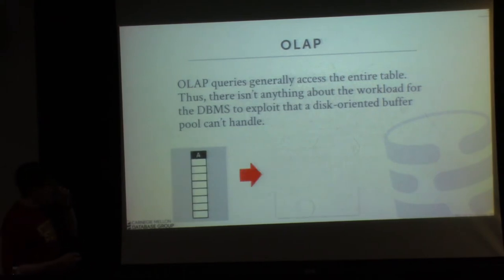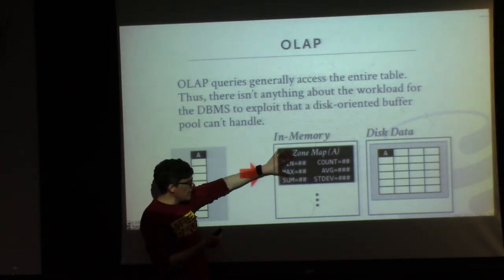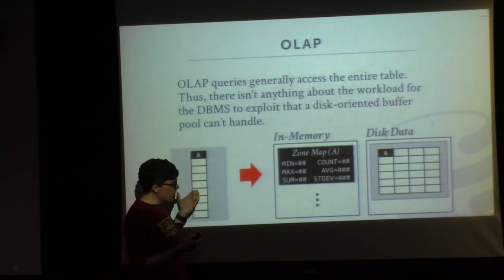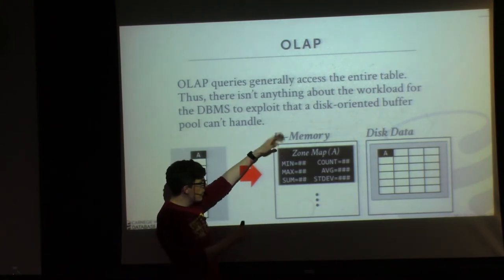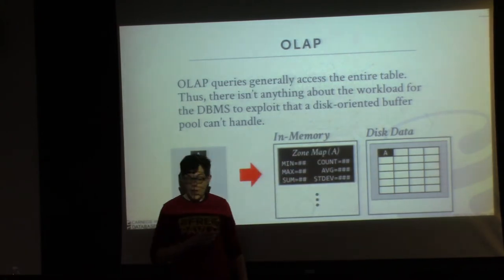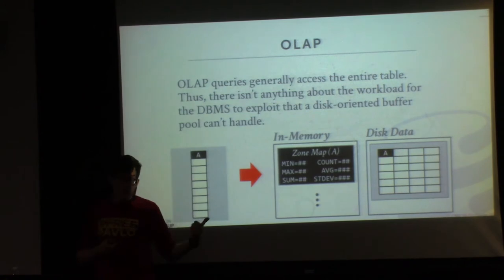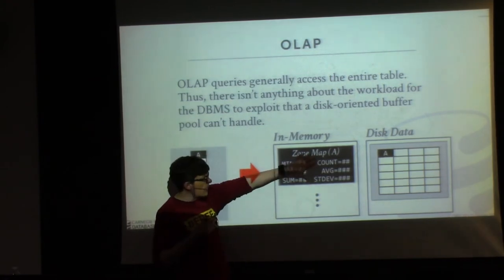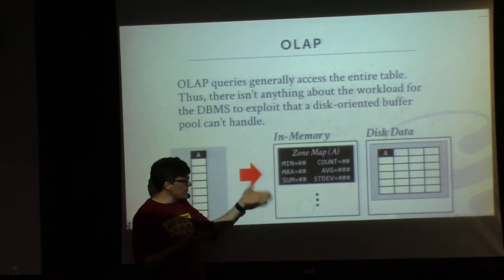Typically for OLAP you'll use zone maps, where you maintain in memory some pre-computed aggregations and other information about an attribute you're trying to scan on for an interval of a column. You keep this in memory so that when a query comes along, you can look at your zone map first, do some early filtering, and make decisions about whether there's anything on disk you wouldn't even need to look at. This is used in a lot of different systems — MemSQL does this, but so does Vertica even though Vertica is a disk-oriented system. But again, if we need something on disk, we still have to go fetch the whole thing.